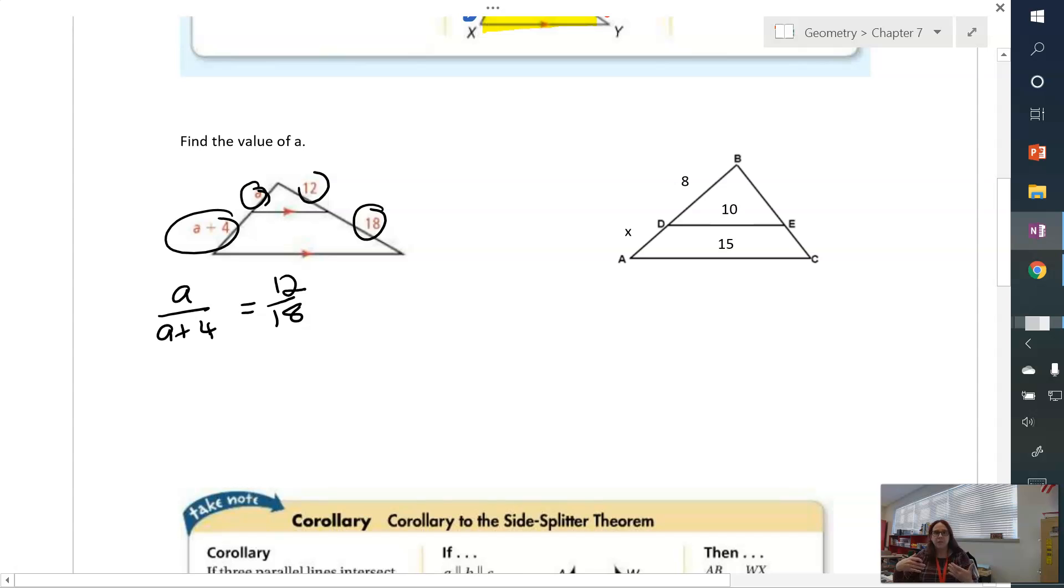And then, just like before, I'm going to cross multiply and solve for a. So I get 18a equals 12 times a plus 4. That's the cross multiply. Now just use your algebra skills and solve the equation. 18a equals 12a plus 48. And 6a equals 48, so a equals 8 in this triangle.